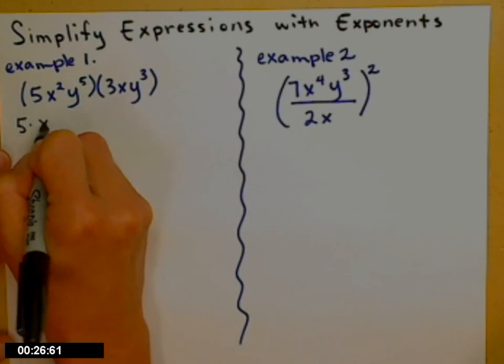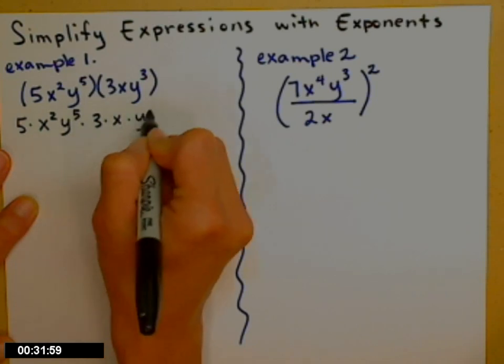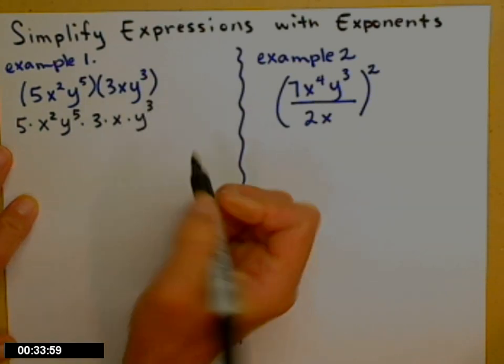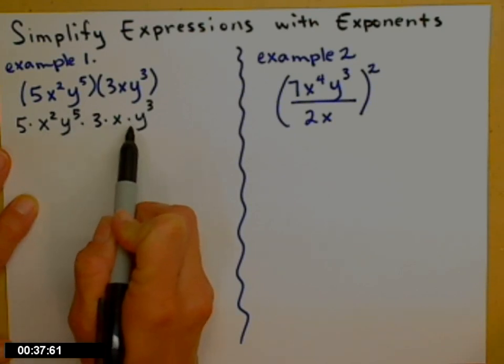So I'll go ahead and show you the nitty-gritty detail here. And I'm putting in little dots for my times. So 5 times x squared times y to the fifth times 3 times x times y cubed.